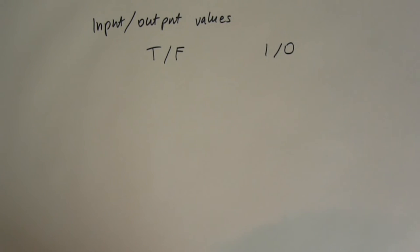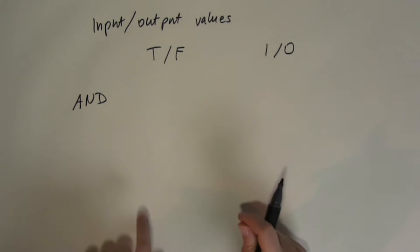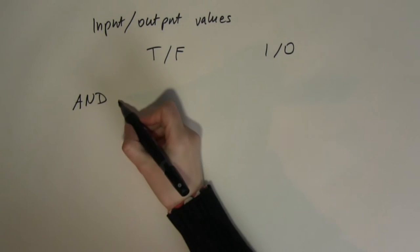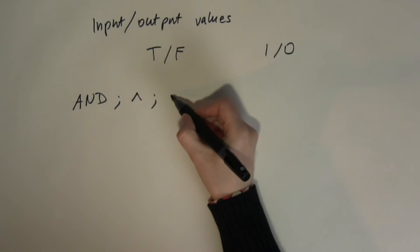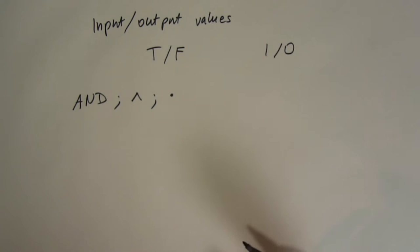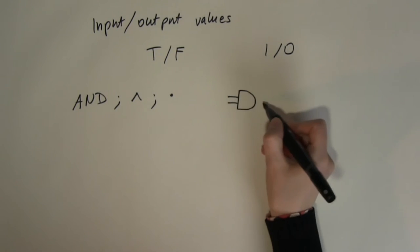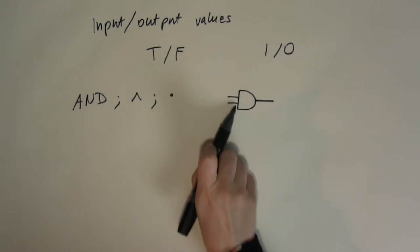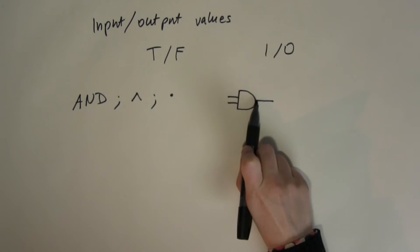The first boolean operation is the AND operation. It is sometimes written out as AND in capital letters, sometimes represented by this symbol, and sometimes by a multiplication symbol, because it works like ordinary multiplication within the binary system. In digital logic, it has a logic gate symbol. This AND gate can take a minimum of two input values and always gives you one output value.